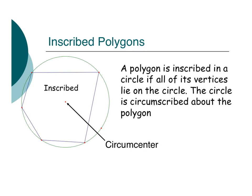To be an inscribed polygon, all the vertices of the polygon have to be on the circle. And that means that the circle is circumscribed about the polygon. The polygon is inscribed in the circle.